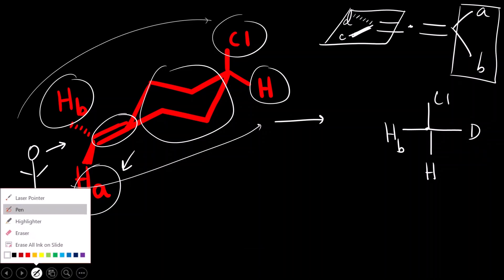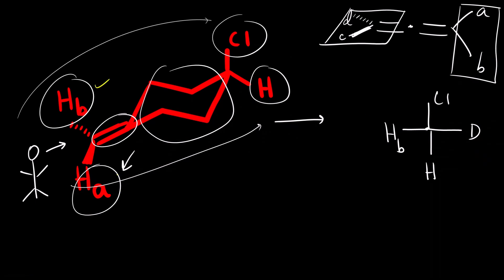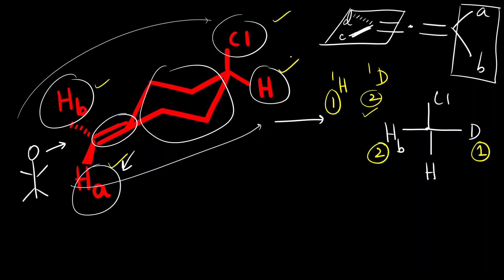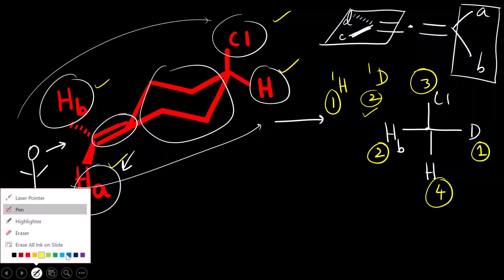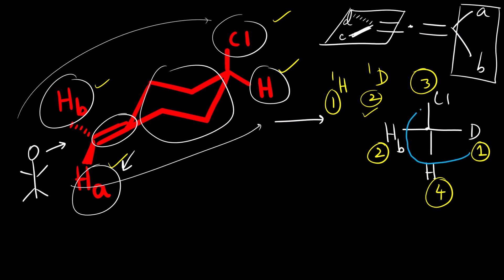For cumulenes, the closer groups to the observer get higher priorities. Between hydrogen and deuterium, deuterium gets first priority because atomic number is the same but atomic mass of deuterium (2) is greater than hydrogen (1). So deuterium gets priority 1 and this hydrogen gets priority 2. Then for the groups away from the observer — chlorine and hydrogen — chlorine has a higher atomic number, so it gets priority 3 and that hydrogen gets priority 4.